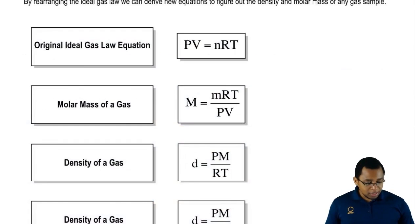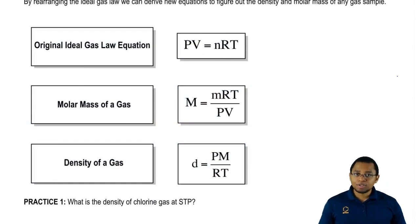We're used to seeing the ideal gas law as PV equals nRT, but we can manipulate this equation further in order to find the molar mass of a gas or the density of a gas.